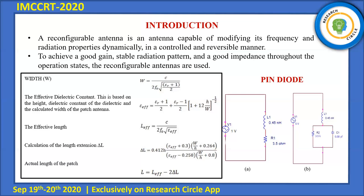In a single reconfigurable antenna, we want resonant frequencies at different operating modes. A reconfigurable antenna is used to achieve very good gain, stable radiation patterns, and very good impedance throughout the operating states. Depending on how many PIN diodes we use, that many possibilities exist for different operating states.